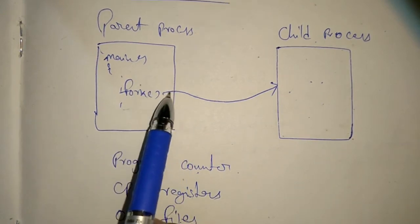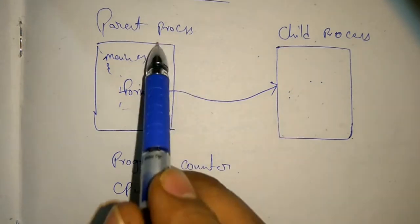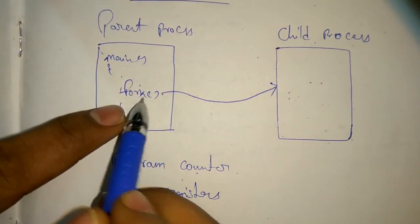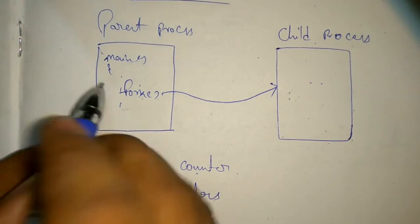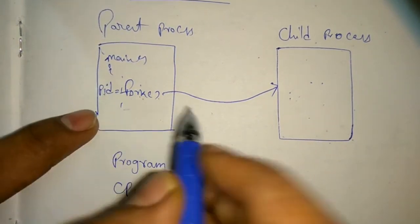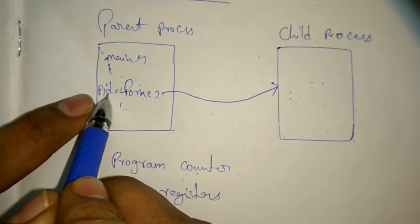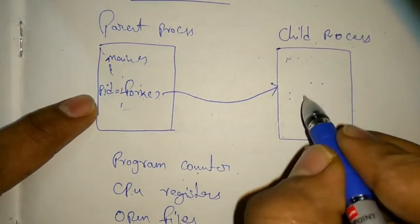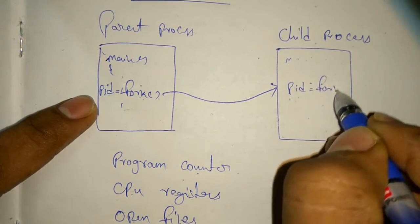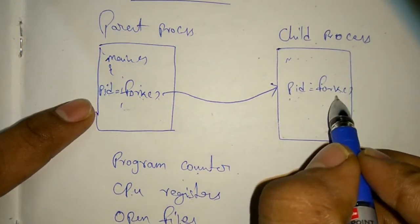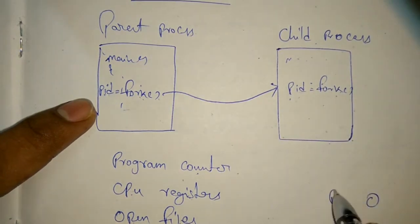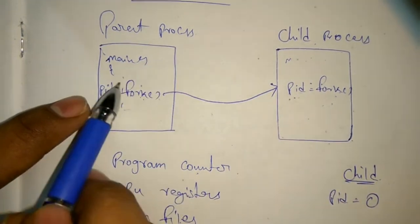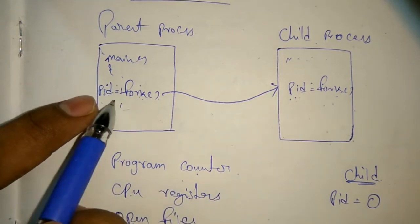When the parent executes fork, the child process is created and these two run concurrently. In the parent process, fork returns the child process ID. We take a variable PID — in this PID, the process ID of the child process is stored. When fork is executed in the child process, fork returns 0. So in the child process, fork returns 0, and in the parent process, fork returns the process ID of the child.